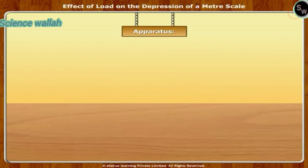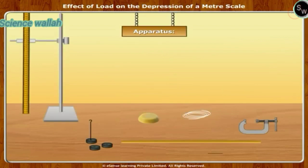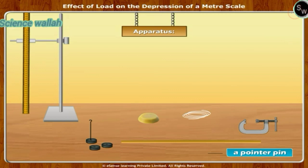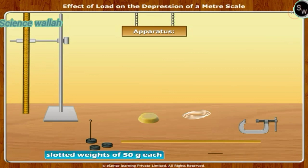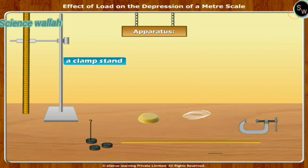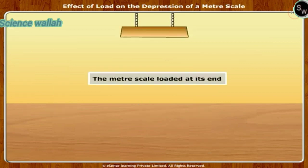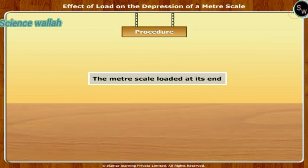Apparatus required: a wooden meter scale, a C-clamp, a pointer pin, slotted weights of 50 grams each, a vertical scale, a clamp stand, thread, wax, etc. The meter scale is loaded at its end.